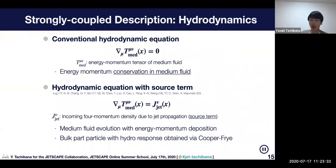I'd like to explain how we can have deposited energy and momentum in the medium fluid. This equation is a conventional hydrodynamic equation without having jet energy momentum deposition. T-mu-nu is the energy momentum tensor of the medium fluid.